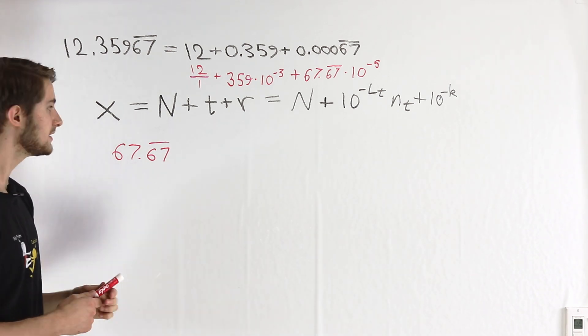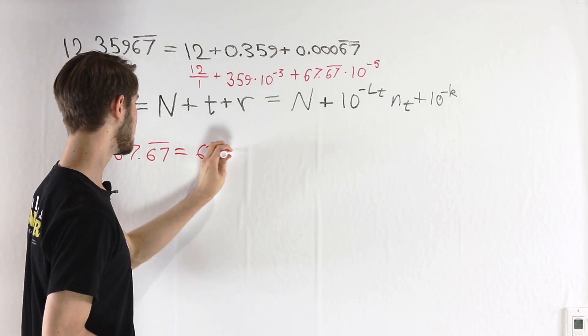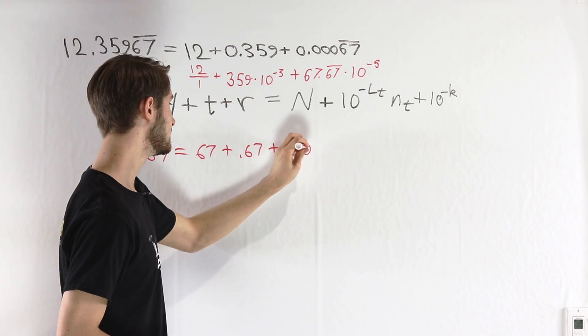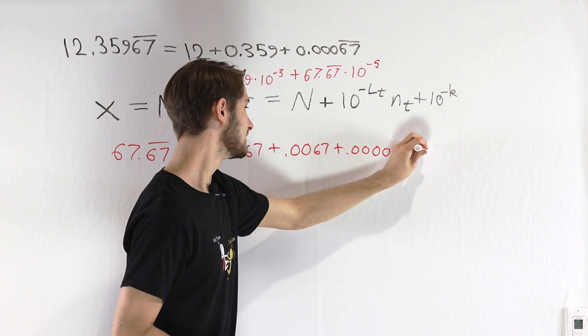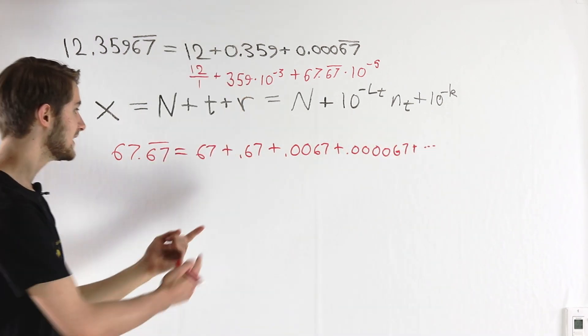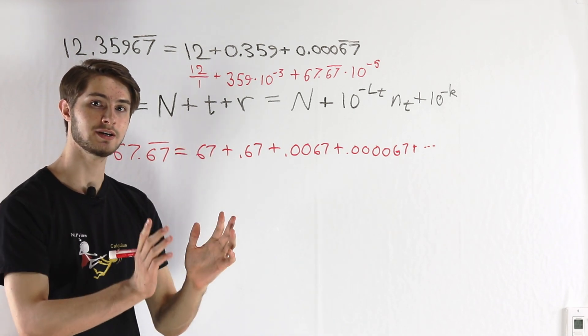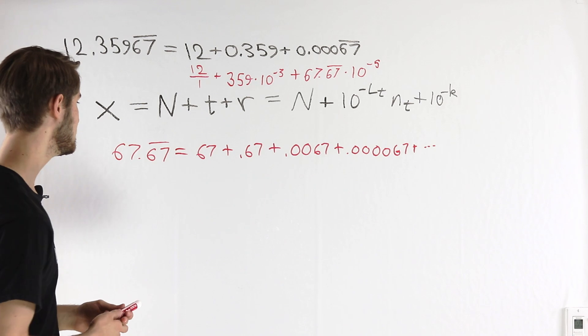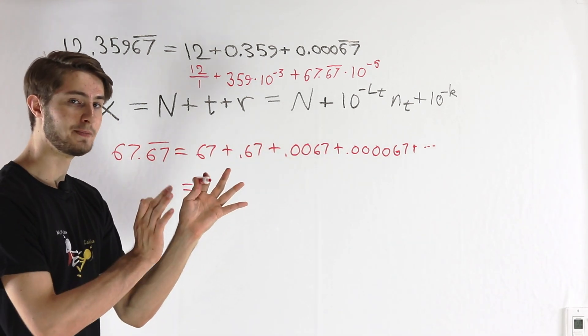One way that we can express this is as 67 plus 0.67 plus 0.0067 and so on. If we can write this with sigma notation so that we get one nice sum, then we can do some calculations on it to figure out what exactly it equals. So let's see if we can write this in a nice compact form.